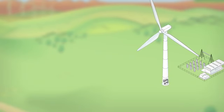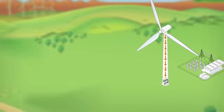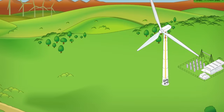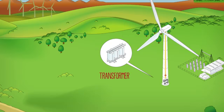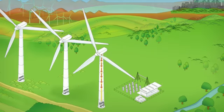The electricity produced in the generator as direct current is conducted through the interior of the tower to the base. There, a converter transforms it into alternating current, which is the most commonly used kind, and a transformer raises the voltage for transport inside the wind farm.